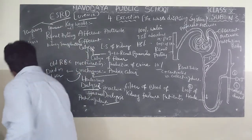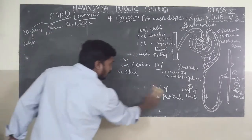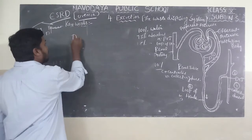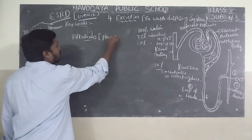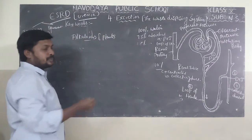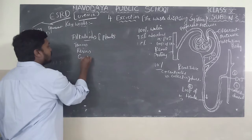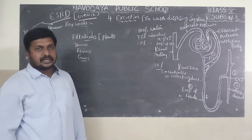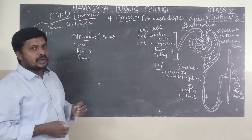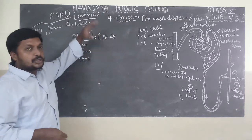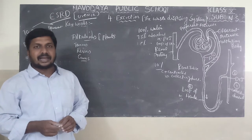Next keyword is alkaloids. Alkaloids are the nitrogenous waste produced by plants. Plants send out waste materials in the form of alkaloids, tannins, resins, and gums. These are the nitrogenous wastes produced by plants. In the next class, I will explain some more keywords from lesson 4 and revise the total lesson once again. Thank you children, we will meet in the next class.